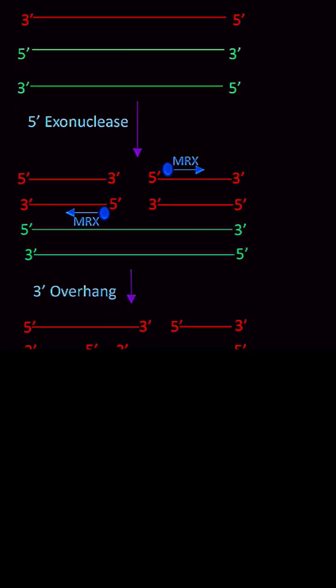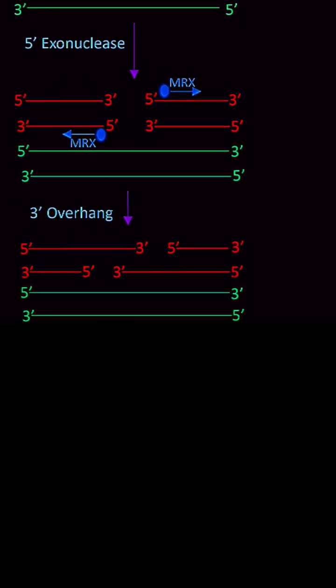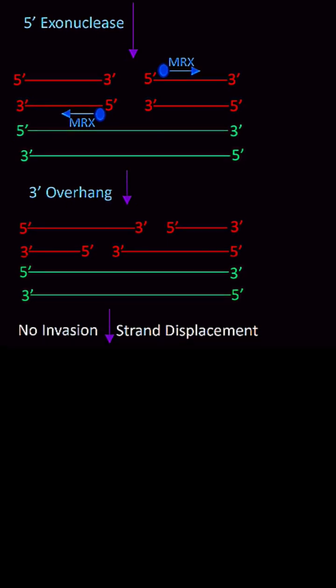And then MRX protein comes, and with the help of 5' exonuclease, they form 3' overhang.